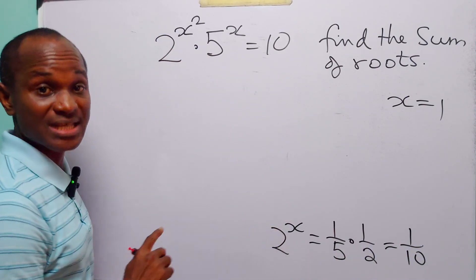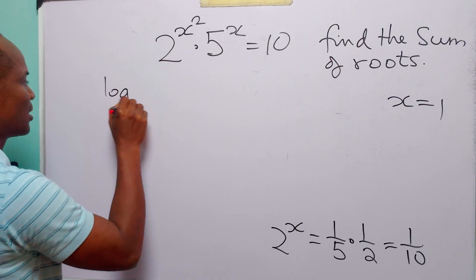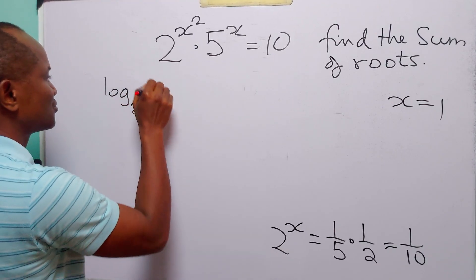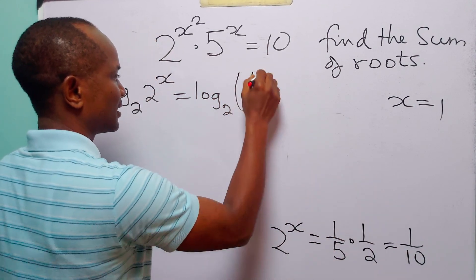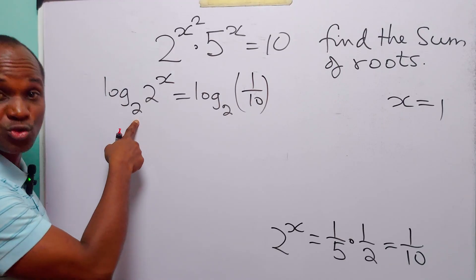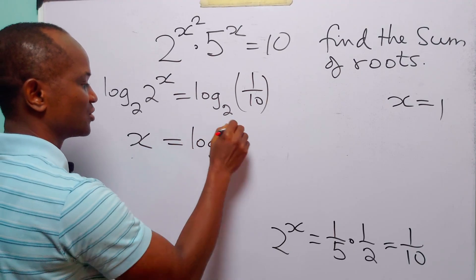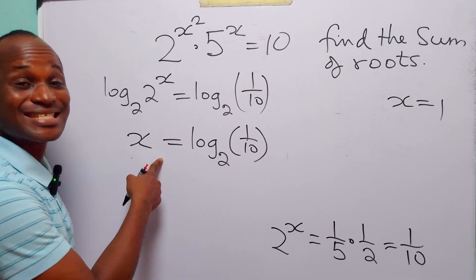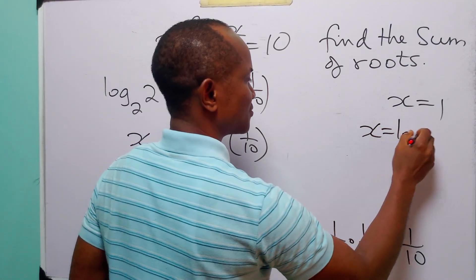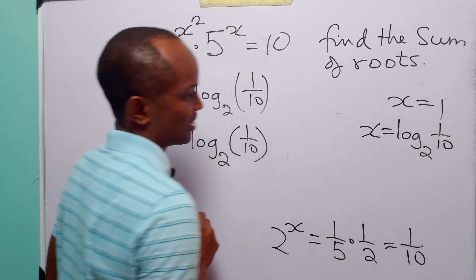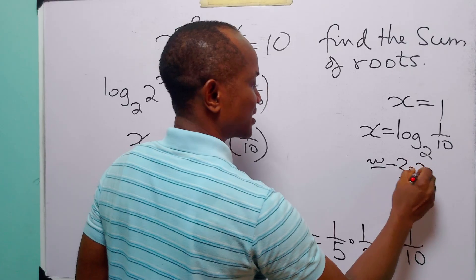At this point, to solve this exponential equation, we take log of both sides. Taking log to base 2, we have log to base 2 of 2 to the power x is equal to log to base 2 of 1 over 10. You know that log to base 2 of 2 to the power x is equal to x. So we have that x is equal to log to base 2 of 1 over 10. This is the second real root of this exponential equation. Using a calculator, this is approximately equal to minus 3.322.